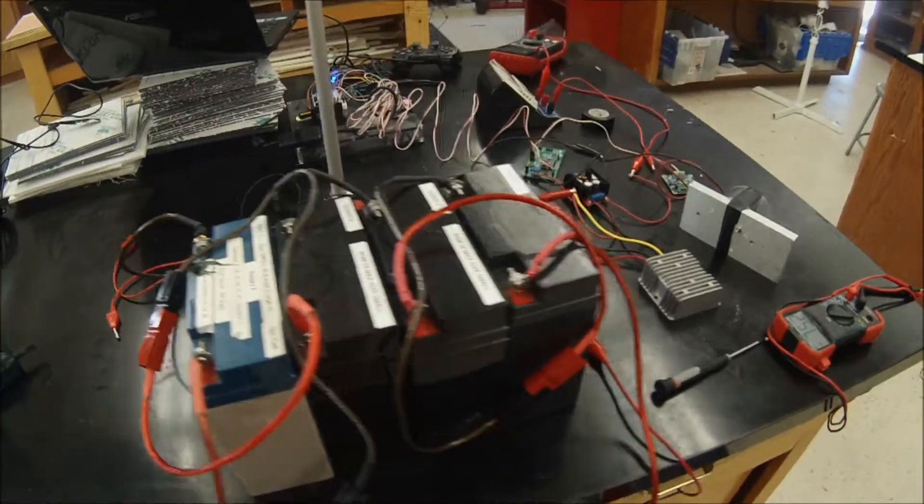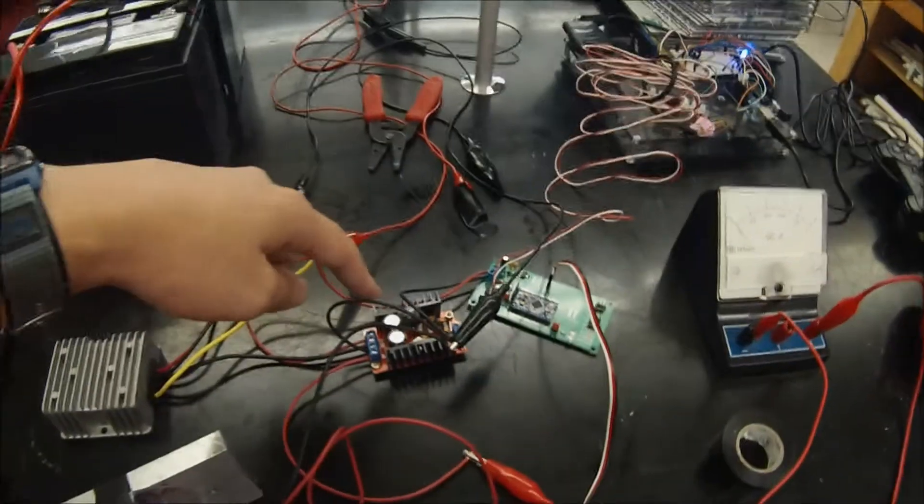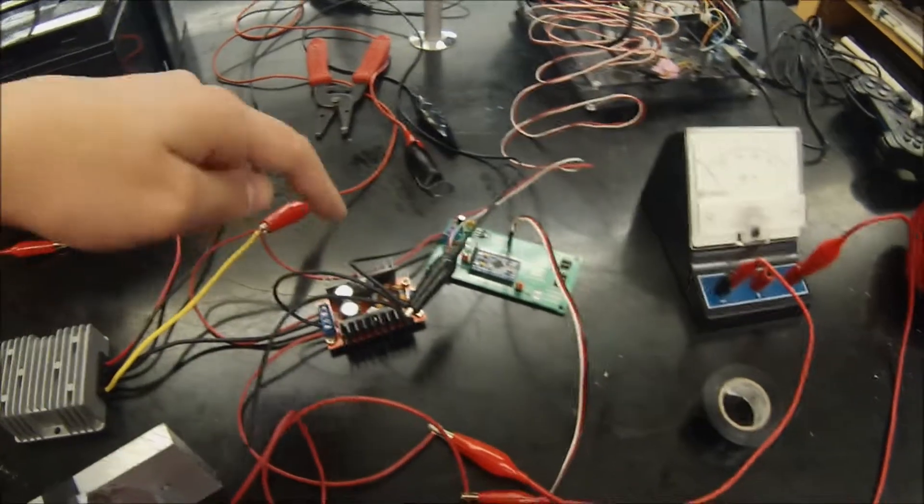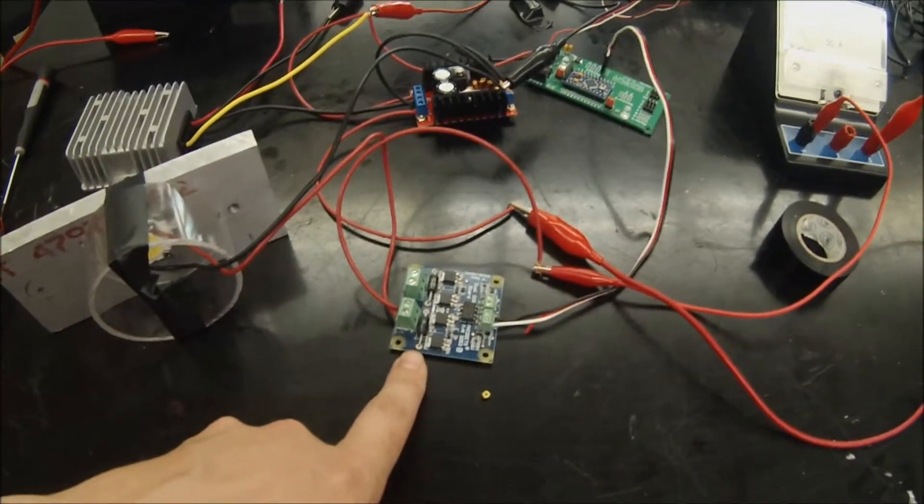So we're getting about 42 volts to the regulator that puts out 12 volts into the step-up converter, and the converter powers this LED through the relay board. My ROV control board controls the relay.